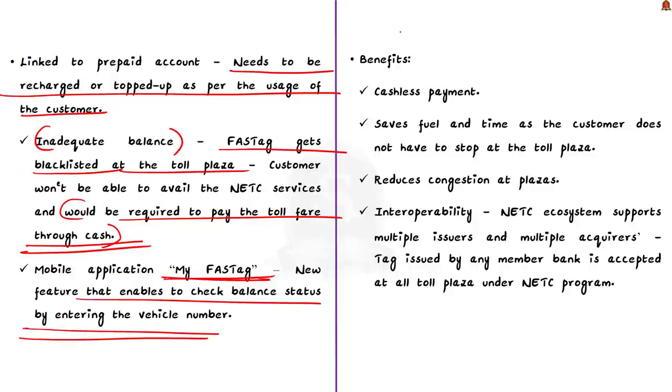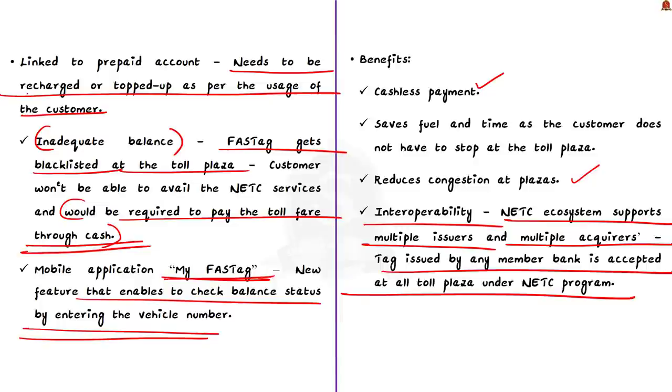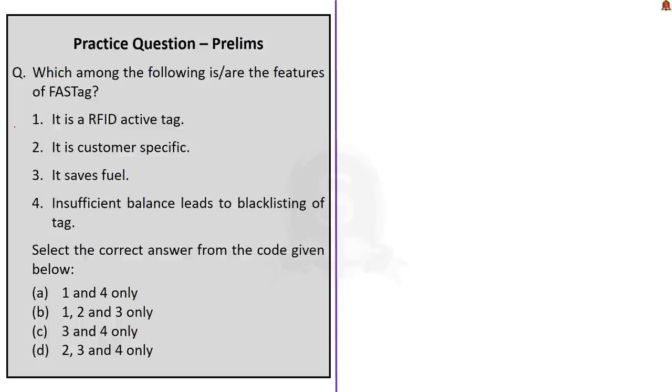Overall the benefits of FASTag are that it enables cashless payment, we can save fuel and time because customers do not have to stop at toll plaza, and it reduces congestion at toll plazas. Another important benefit is interoperability supported by NETC ecosystem because it supports multiple issuers and multiple acquirers. The tag issued by any member bank is accepted at all toll plazas under NETC program. From February 2021, government declared all lanes of fee plazas on national highways as FASTag lane. The news is that because of this development, overall FASTag penetration has reached approximately 96 percent, meaning around 96 percent of toll users or national highway users now use FASTags.